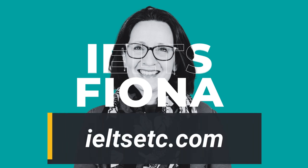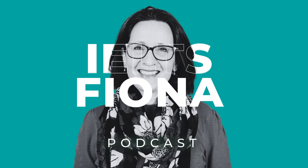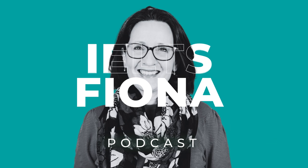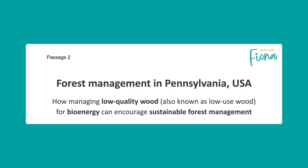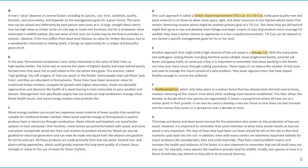Hi guys, this is Fiona from IELTS with Fiona. In this podcast, we're going to do reading passage two from the most recent Cambridge book, which is book 18. It's called Forest Management in Pennsylvania, USA. One of my students said she thought it was really easy and in fact easier than part one. But I think it's because she had the vocabulary you need to understand this topic — it's one of the topics in my vocabulary course, and so many of the words came up.